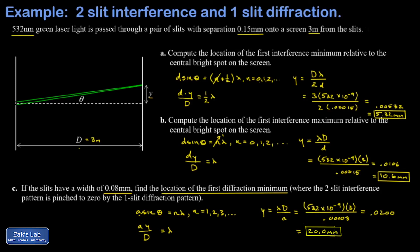So this is the first point where the diffraction pattern is going to suppress the interference pattern to zero, and we'll see our series of bright dots for interference fade out at that point.